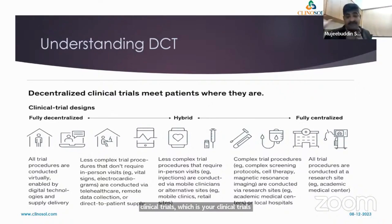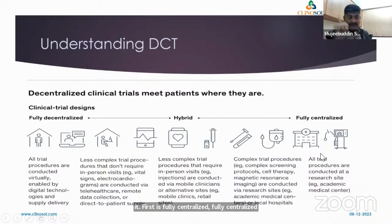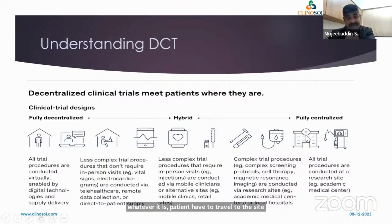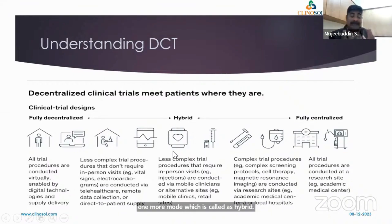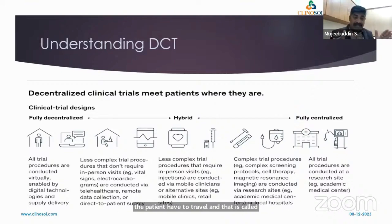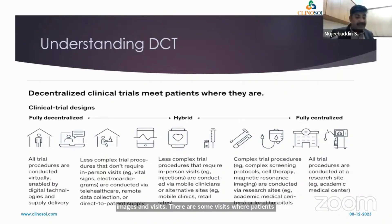There are three types of clinical trials. First is fully centralized — all clinical trial subjects must come to sites to take drugs, give samples, enter data, give consent, and report adverse events. That is traditional. Second is hybrid — some assessments and activities can be done via telephone or virtual visits, while some visits require the patient to travel, such as telephonic contacts, telemedicine visits, and some in-person assessments the investigator must carefully review.